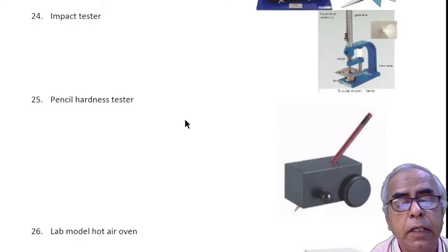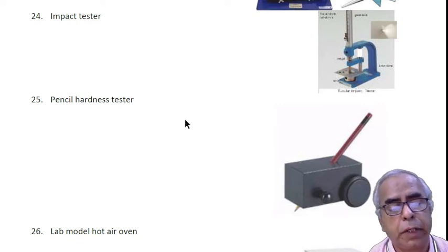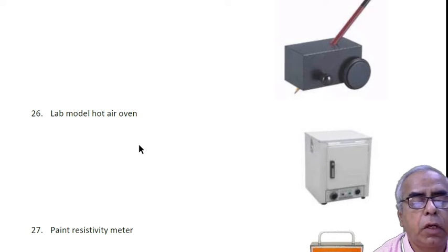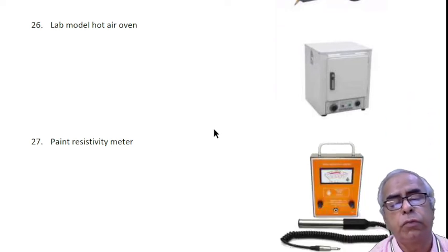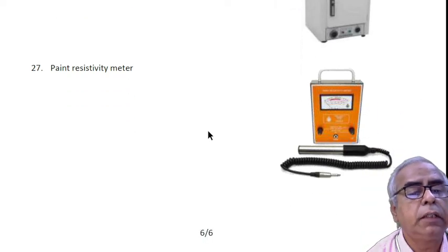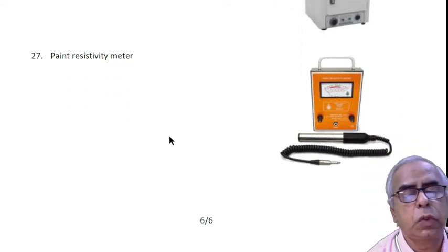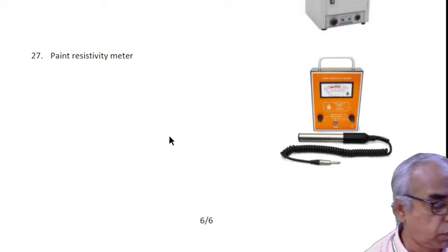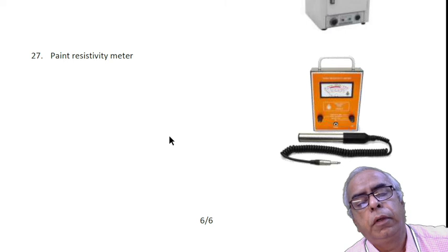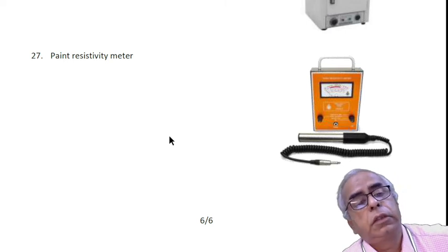Laboratory model hot air oven is required for studying moisture and water content. The paint resistivity meter is also very important in case of electrocoating, powder coating, or any electrostatic paints.